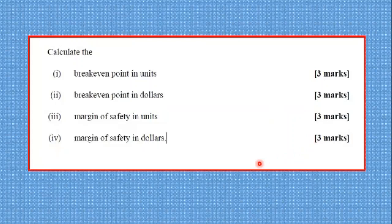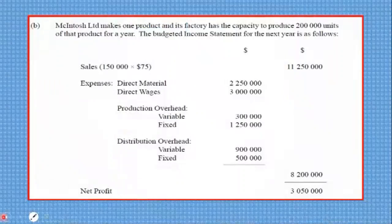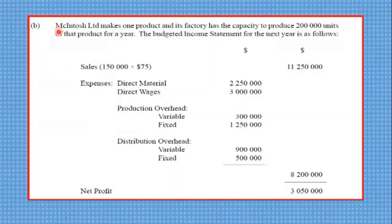So in all, this part of the topic would have given us 22 marks. We have the data here. McIntosh Limited makes one product and its factory has the capacity to produce 200,000 units of that product for a year. The budgeted income statement for the next year is as follows. And we are given the figures here.